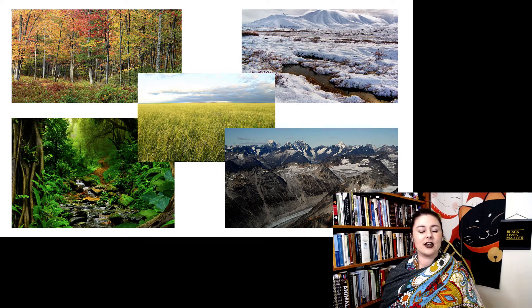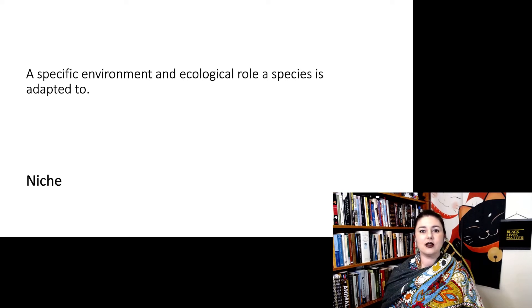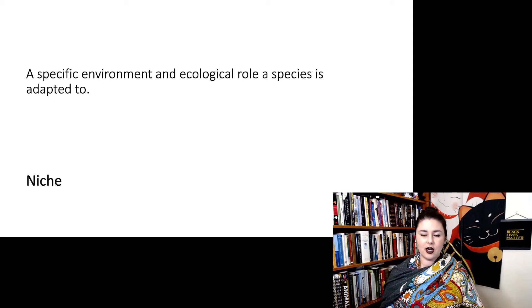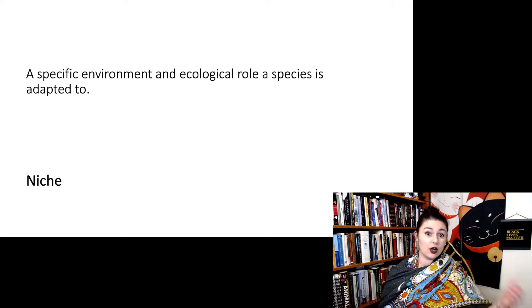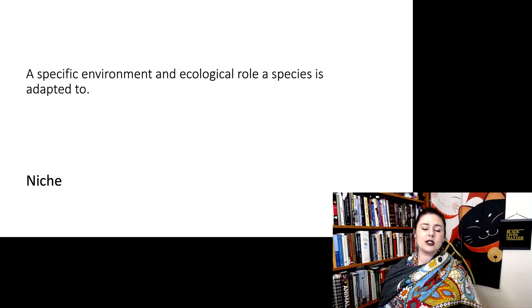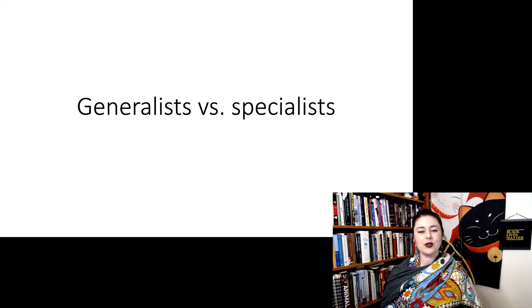What we're really talking about here is the idea of a niche. A niche is the specific environment and ecological role a species is adapted to. There are many different ways you can define this. For example, flounders live on the bottom of the ocean, so their niche is bottom feeders on the ocean floor. We can define it that specifically, but we can also talk about it in slightly more general terms.